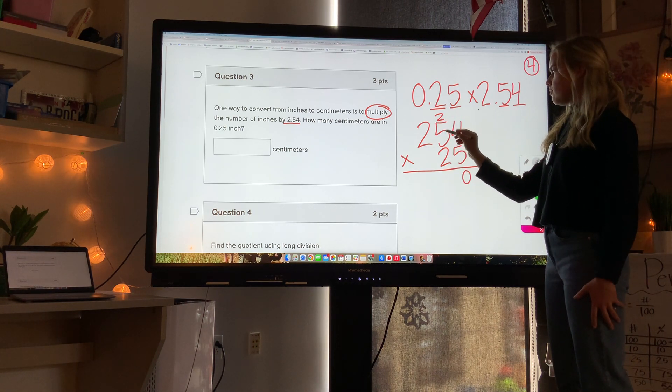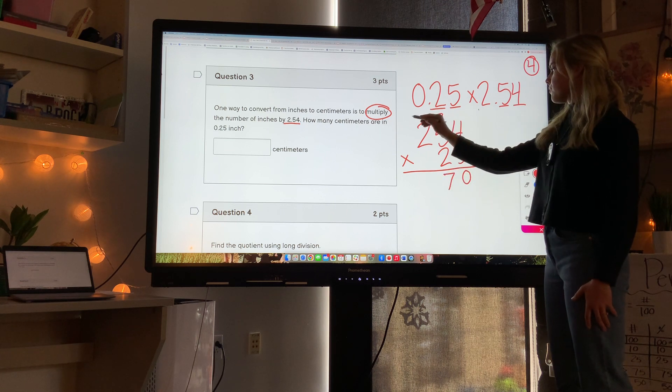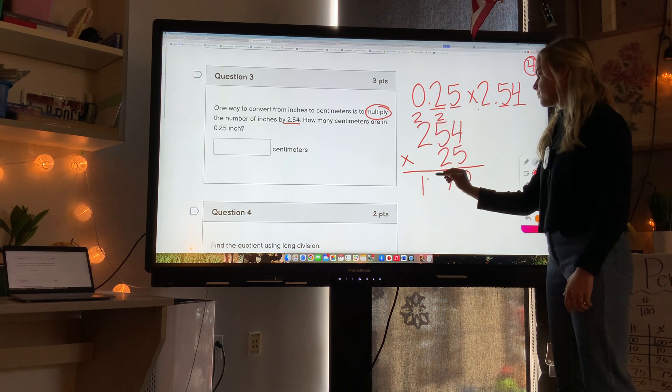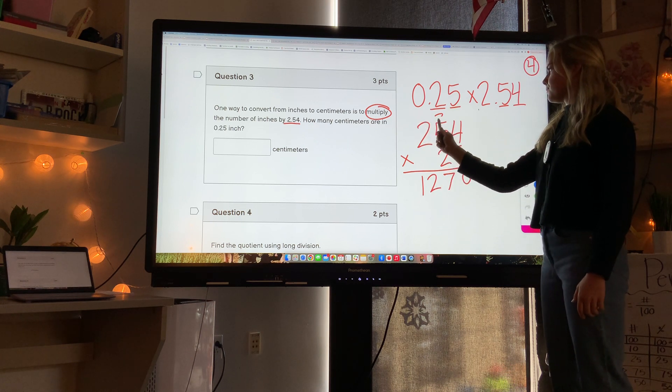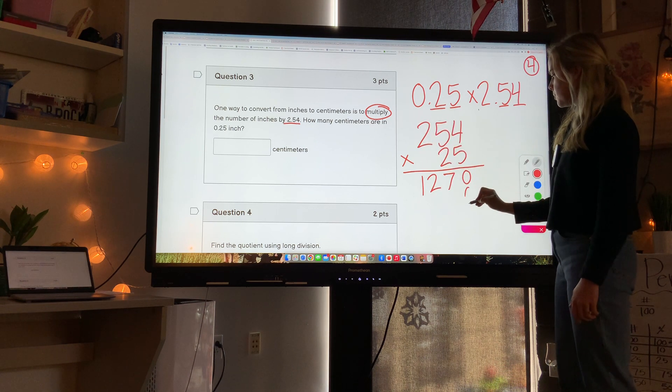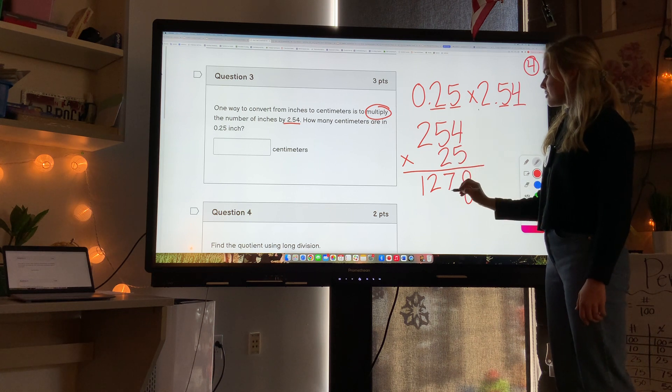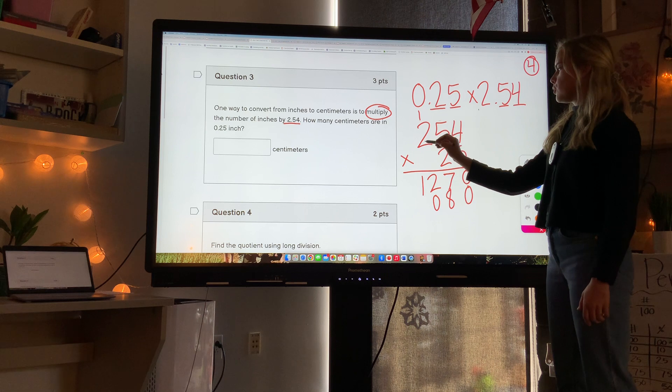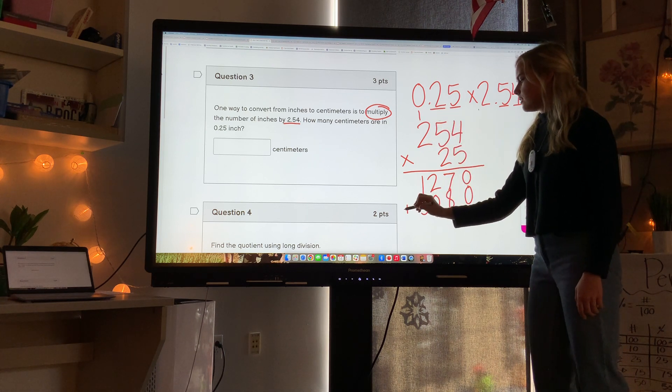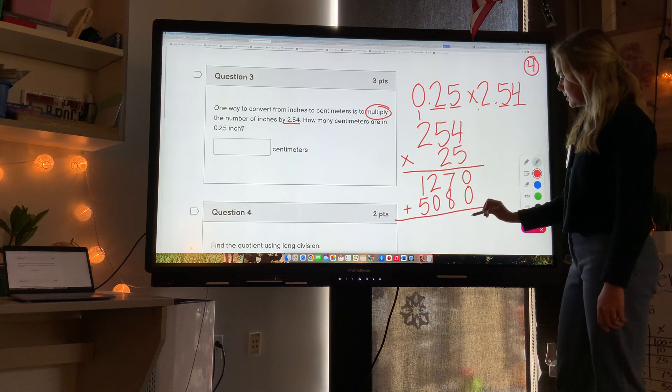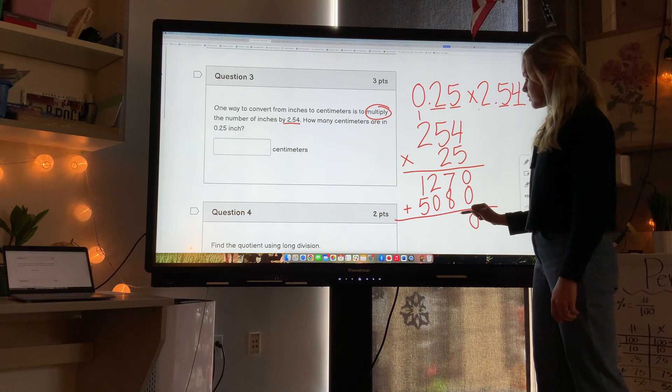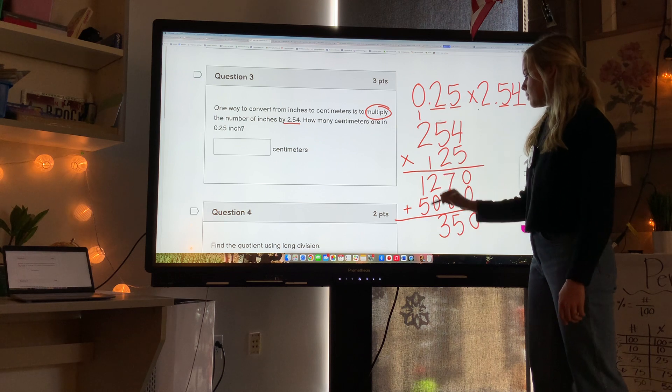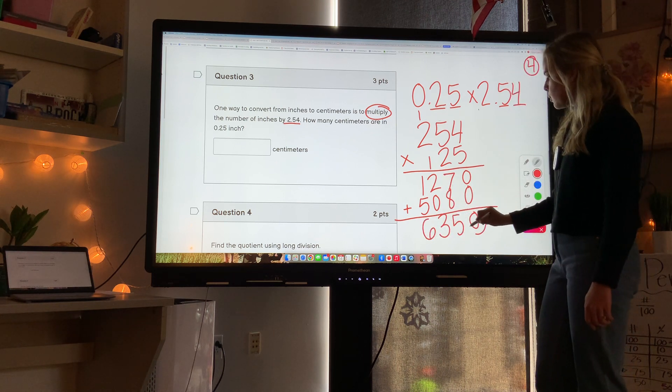Five times four is twenty. Five times five is twenty-five, plus two is twenty-seven. Five times two is ten, ten plus two is twelve. Now I'm going to erase this part. Add a zero for the missing place value. Two times four is eight. Two times five is ten. Two times two is four, plus one is five. Then I add these guys. Zero. Seven plus eight is fifteen, carry the one. One plus two is three, plus two is five. One plus one is two, plus five is six.